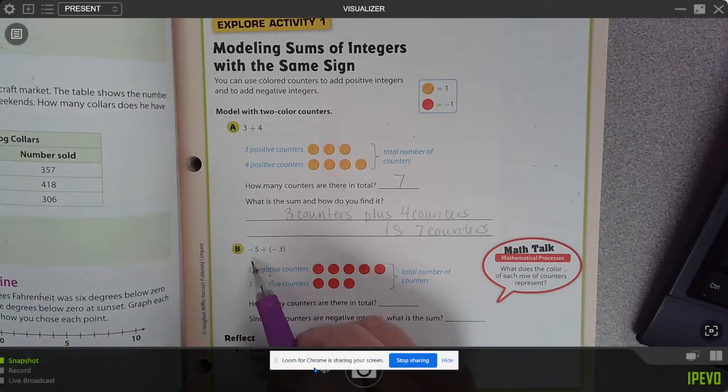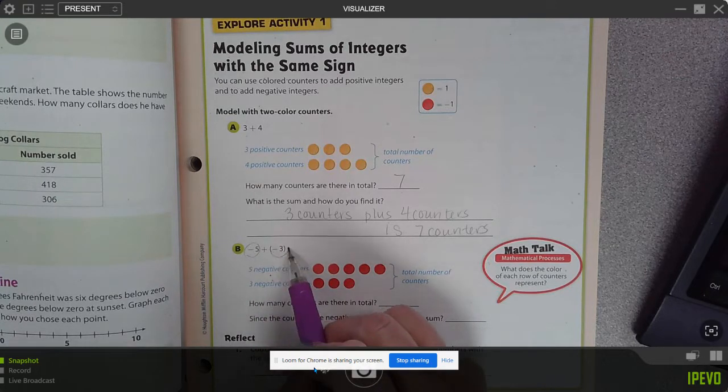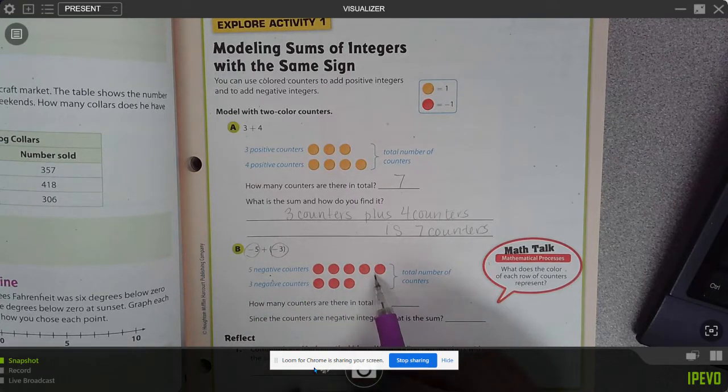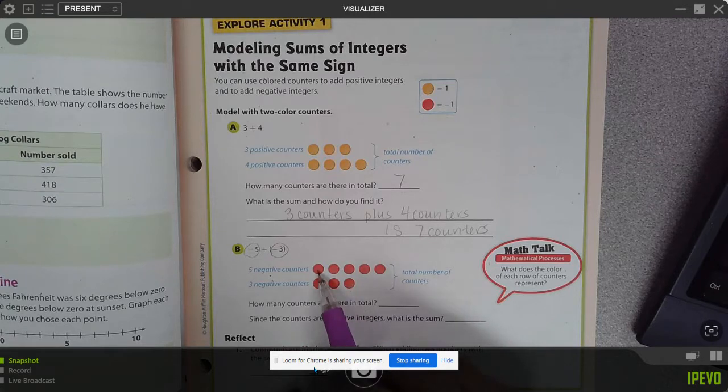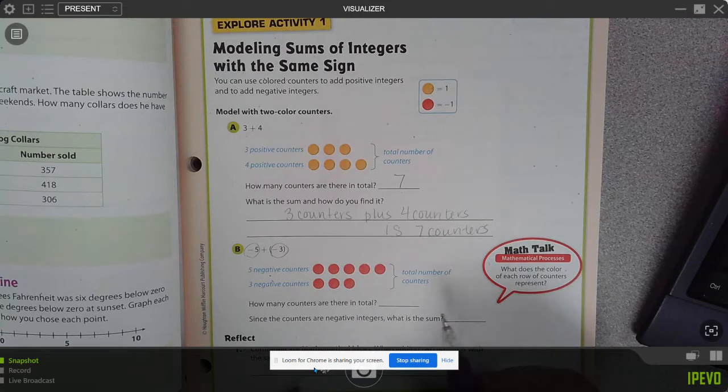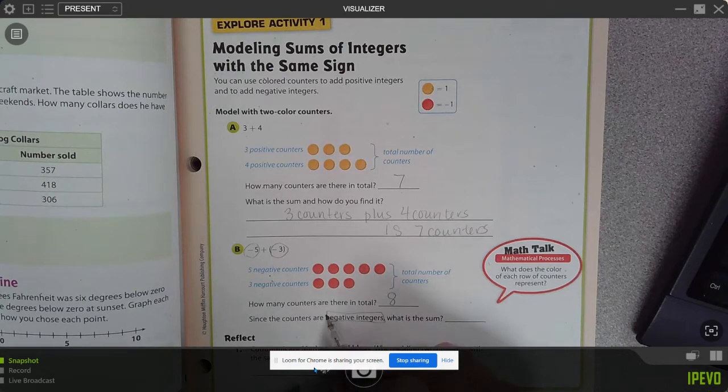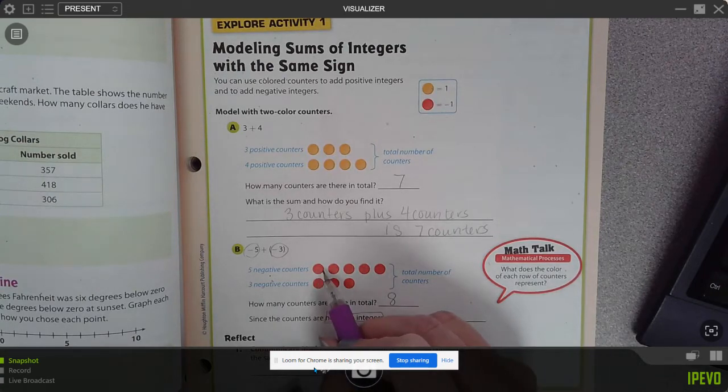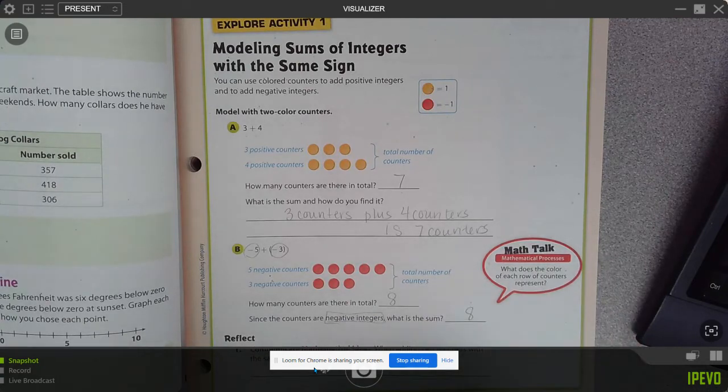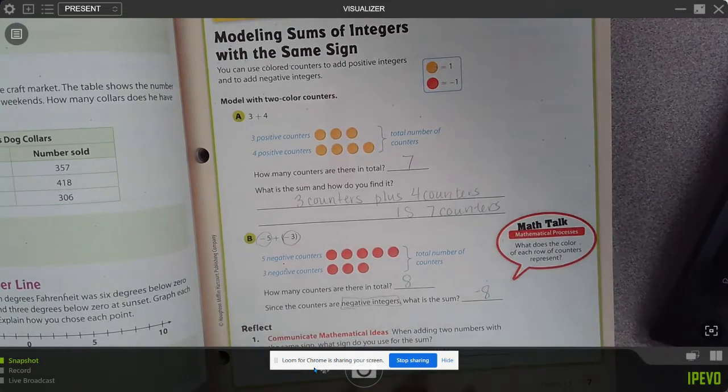If we have two that have the same sign again, and we start representing them with counters, these are all five negative counters that are red, three negative counters that are red. So how many counters are there in total? There are eight. Since the counters are all negative integers, the sum then shows that I have one, two, three, four, five, six, seven, eight. And because they are all red, they are all negative. So we have a total of eight negative counters.